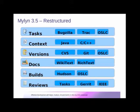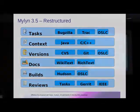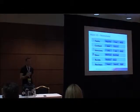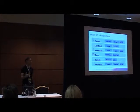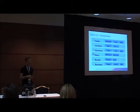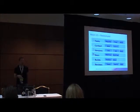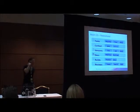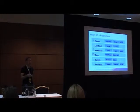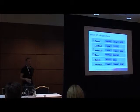With Mylyn 3.5, you still have Tasks, Context, Versions, and Docs, but there are two new components. One is called Builds — an abstract API that allows you to plug in continuous integration systems into Eclipse. The de facto implementation hosted at Eclipse.org is Hudson, because that's what Eclipse uses to do all its builds. The other is called Reviews — an abstract API where you can plug in code review systems. We're focusing on Gerrit first within Mylyn because that's what a lot of Eclipse projects are going to use.